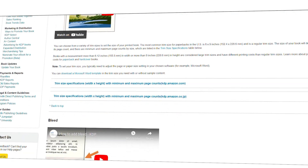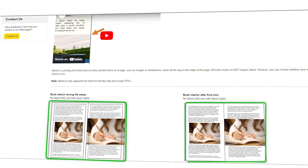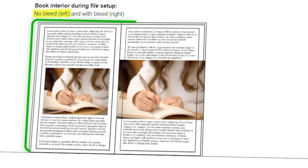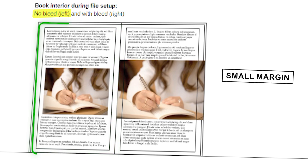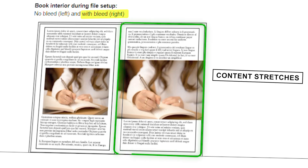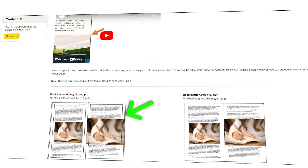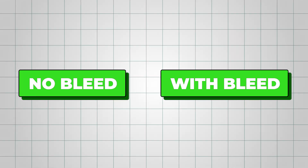Scroll down a bit and you'll come across a section called Bleed. When a book's interior is marked as 'no bleed,' it means there's a small margin around each page, leaving a white border. On the other hand, 'with bleed' means that the content stretches all the way to the edges of the page with no white border. I'll go with 'with bleed' because it allows elements to extend all the way to the edge of the page. The choice is entirely up to your personal preference.